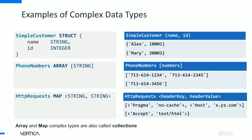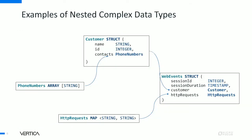Arrays and maps are commonly called collections in many documents. We saw examples of one-level complex types. On this slide we have nested complex types. On the right, we have the root complex type called web events of type struct. This struct has four fields: session ID of type integer, session duration of type timestamp, and then the third and fourth fields — customer and HTTP requests — are further complex types themselves.